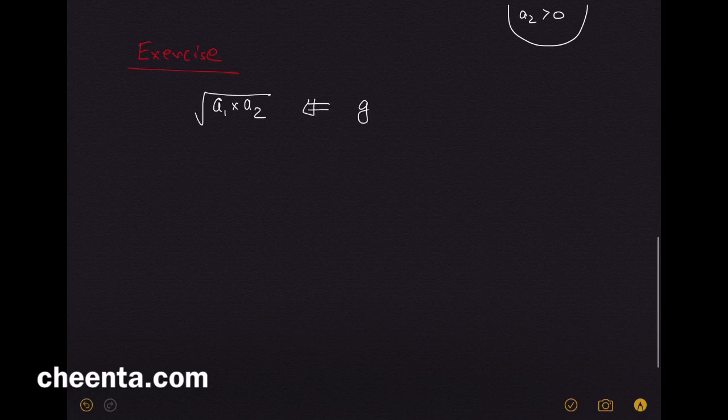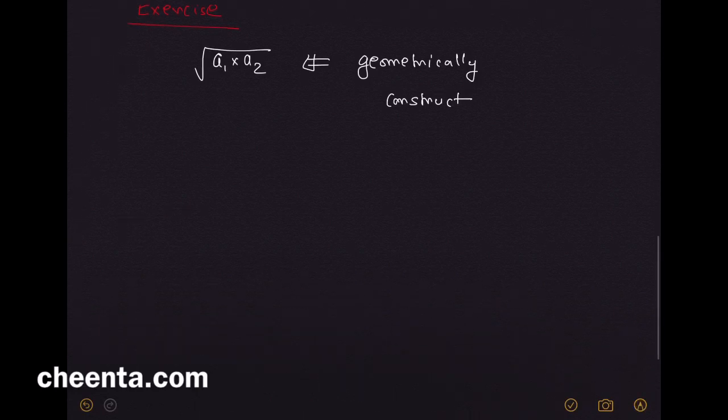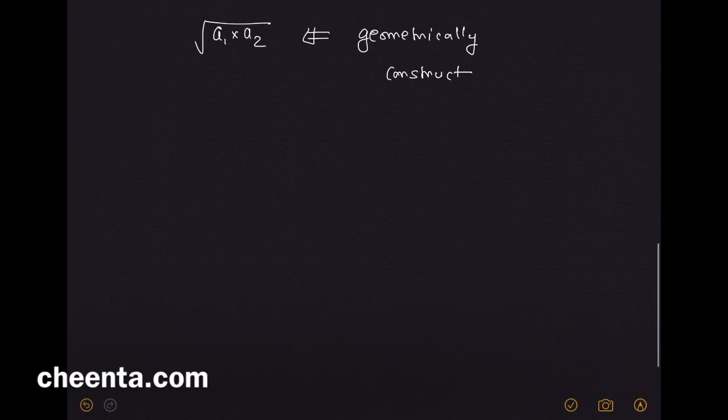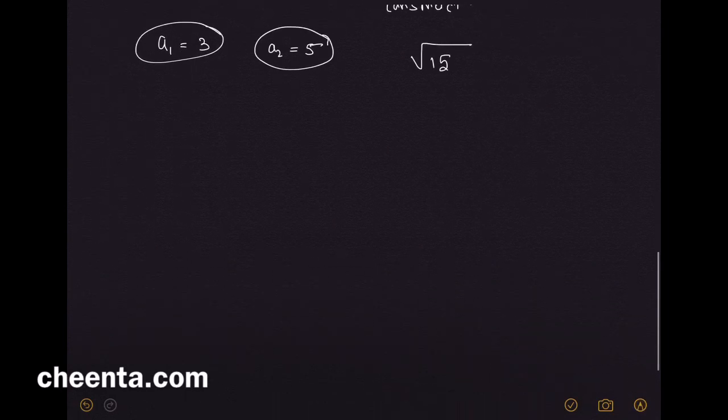We want to construct the square root of a₁ times a₂ geometrically using a compass and pencil and maybe a straight edge. Suppose a₁ is 3 and a₂ is 5. Can you construct square root of 15 using a compass, pencil, and straight edge?